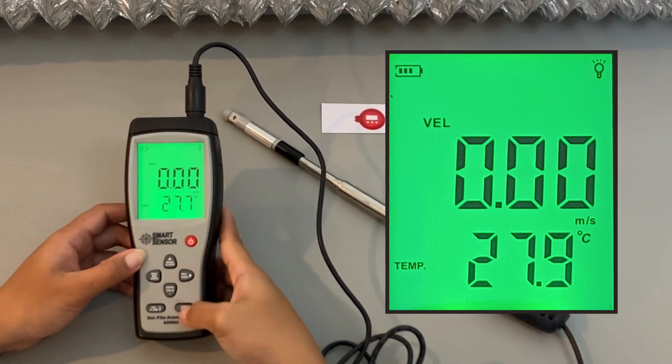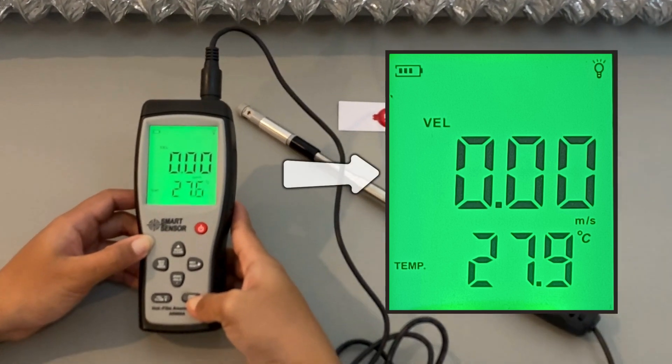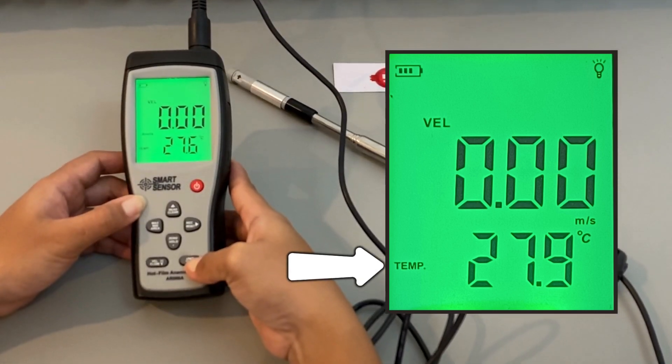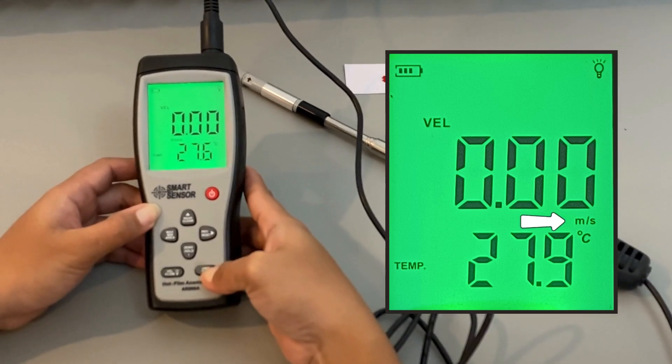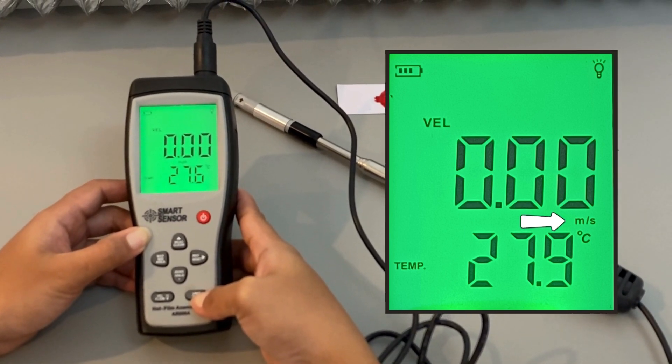When measuring velocity, the LCD screen will show the air velocity and temperature readings. In this case, it's displayed in meters per second, which is the default.